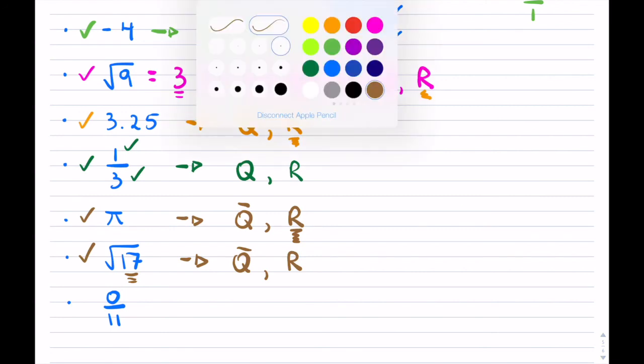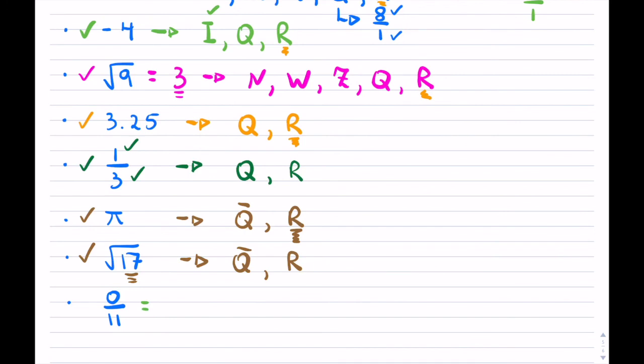All right, brings us to this last one here. Be careful, 0 over 11 is just 0. If you have a 0 on top and you're dividing it by a non-zero, the answer is 0.